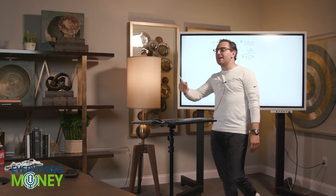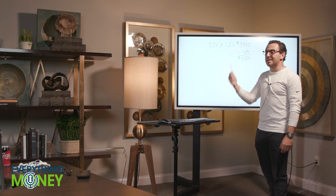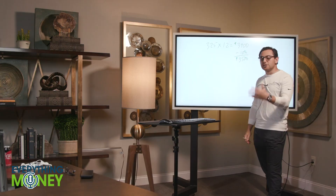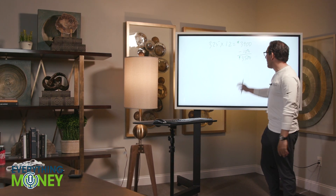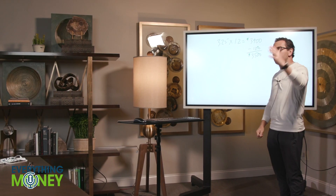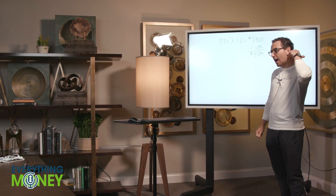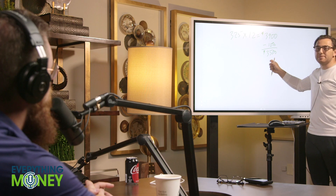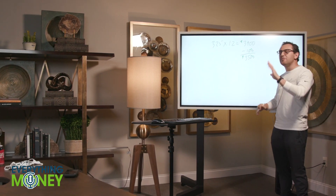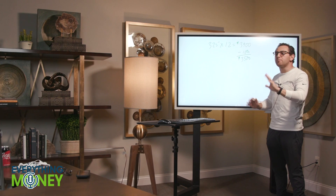Does this unit cost me more or less to operate after the rehab? A little bit less — let's assume it's the same. So how much is that $3,500 as profit? Well, I already covered operating costs in the original $540 I was collecting. How much more is it costing me to operate this unit when I'm getting $3,500 more rent a year? Zero. This is all profit.